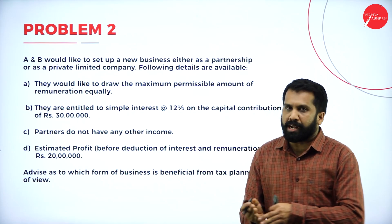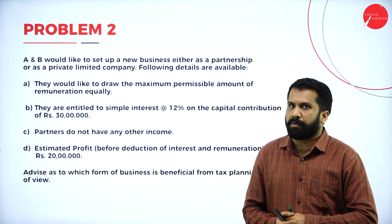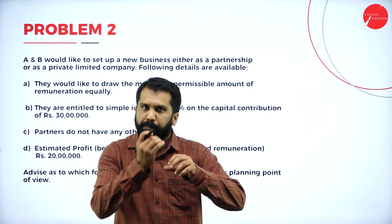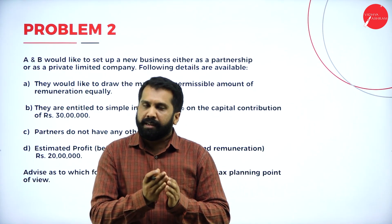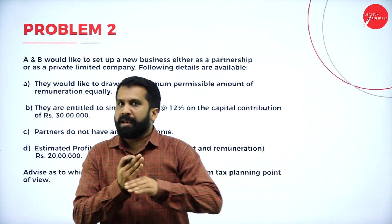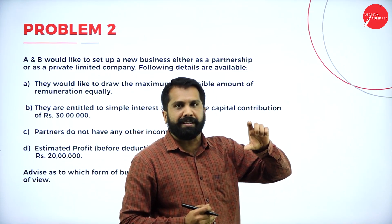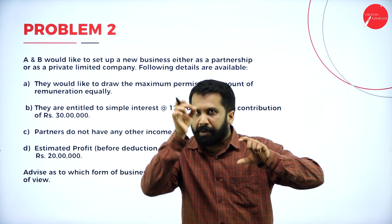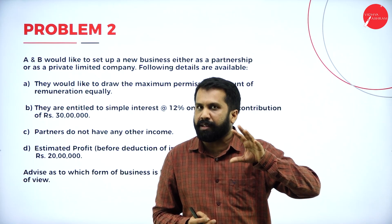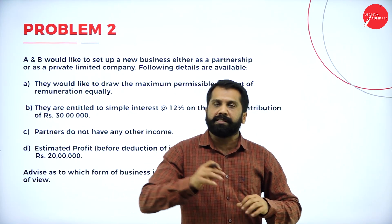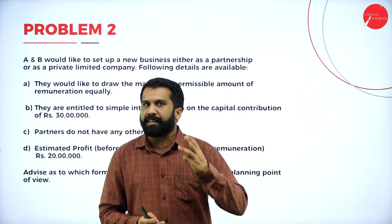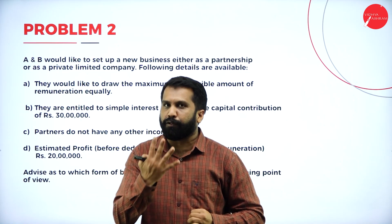Now Problem Number 2. As I told you, the format is: do partnership form, complete your book profit, then go with individual partners — there are two statements. Then come to company, calculate the actual value, then do individual members. Finally, compare total tax payable under partnership form versus company. Under partnership form you will get three taxes, under company you will get four taxes.